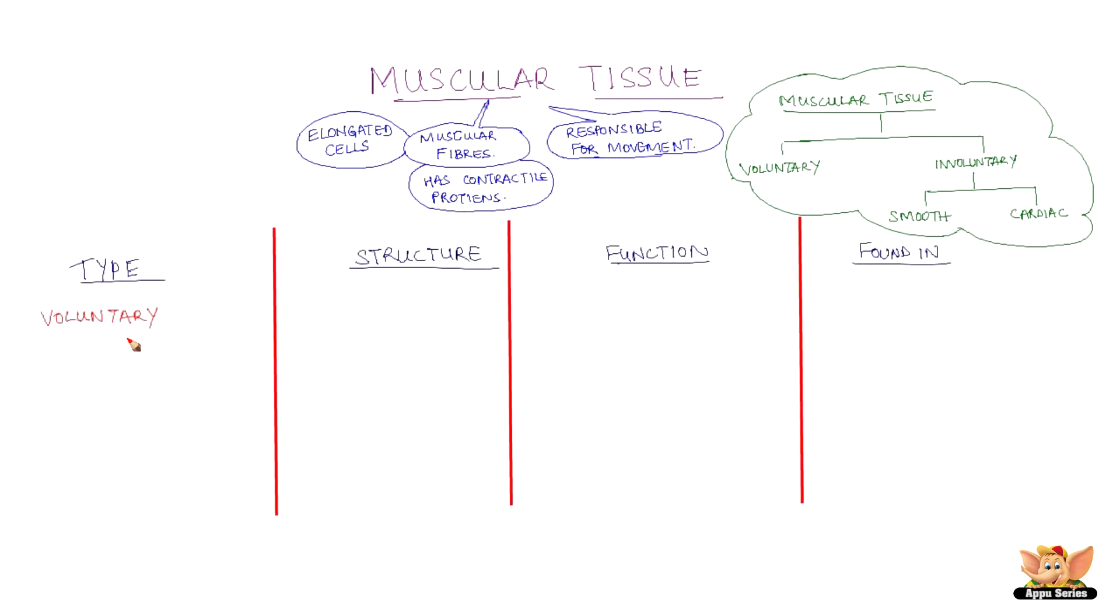Voluntary muscles are those which can be moved by conscious will. These are also called skeletal muscles as they are mostly attached to bones. They are also called striated muscles because under a microscope, they show alternate light and dark bands.